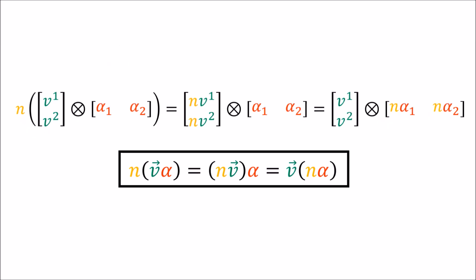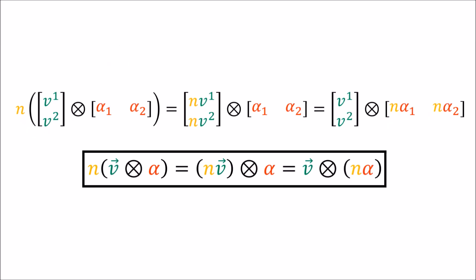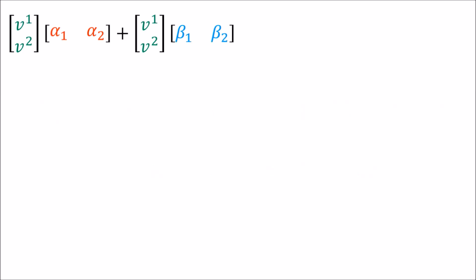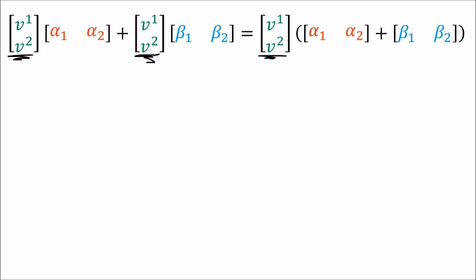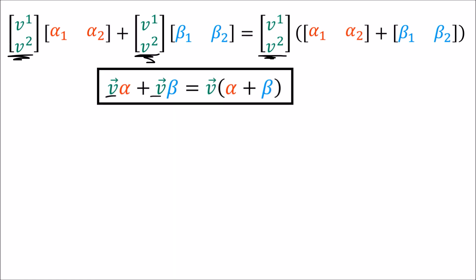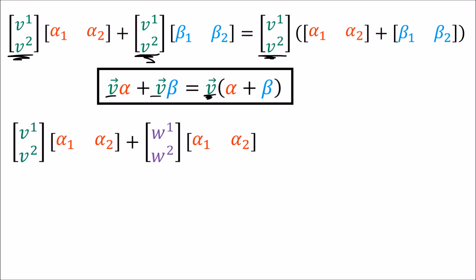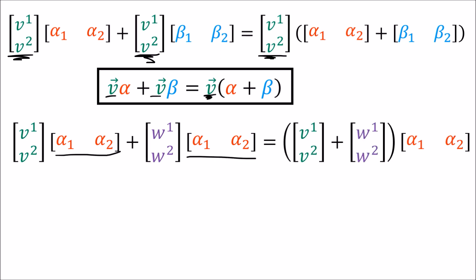We can rewrite these array multiplications as Kronecker products and rewrite tensor products using the circle-times symbol — it's all the same thing. Now let's consider addition. If we have two column-row array multiplications added together where the column on the left is the same in both terms, we can factor out the column. Likewise, if we have a sum of two tensor products where the tensor on the left is the same in both terms, we can just factor that out. Alternatively, if the row is the same in both terms, we can factor out the row.